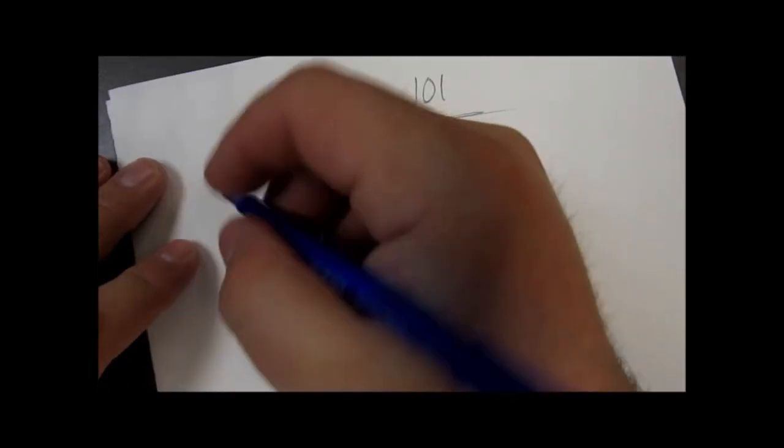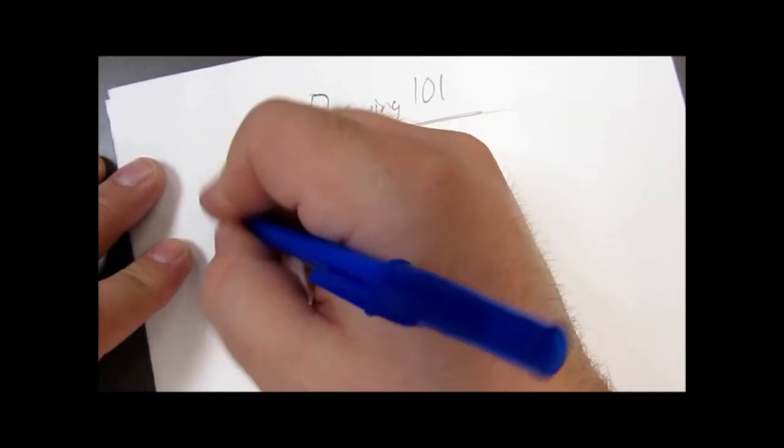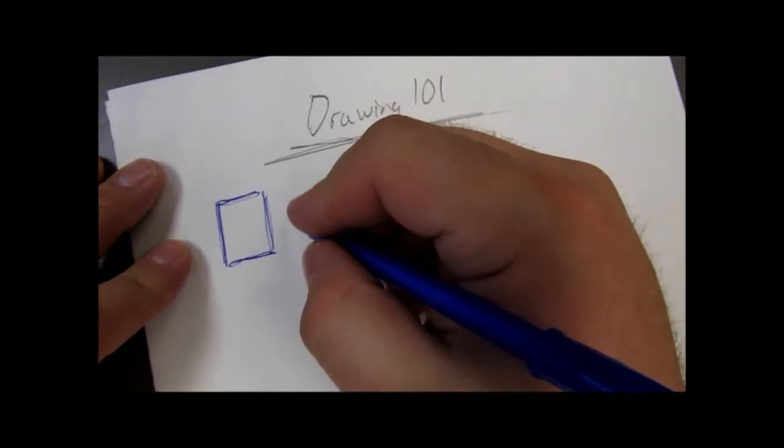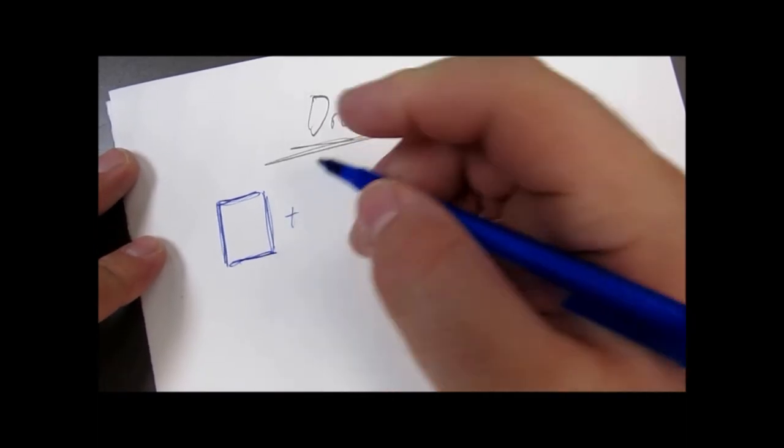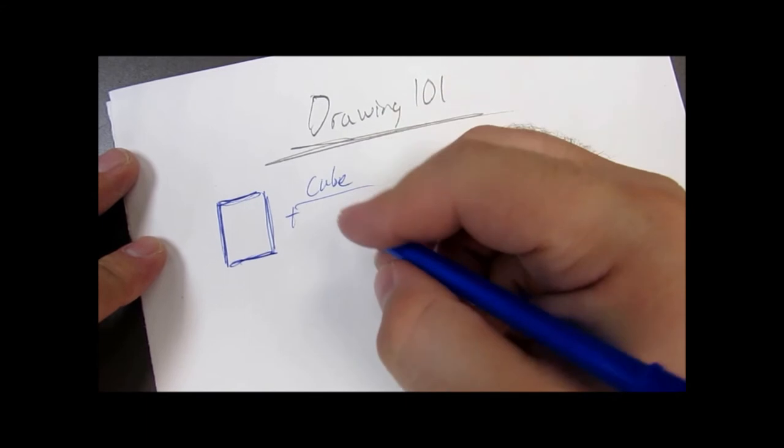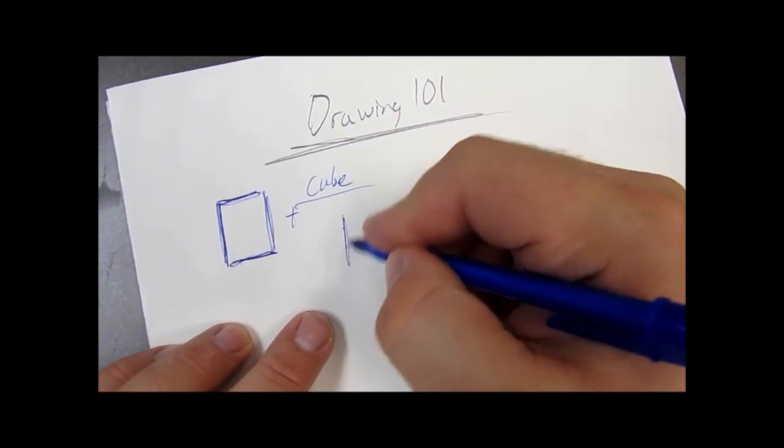All right, so the top of the paper here I've labeled it with 'Drawing 101' and we're going to draw some basic shapes first. Starting off on this little caveat, we're going to be working with a square. Once you've copied the square on the paper, we're going to add a plus sign to this and we're going to be adding lines to this to turn it into a three-dimensional cube.